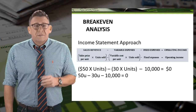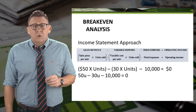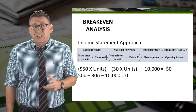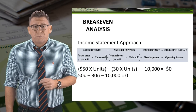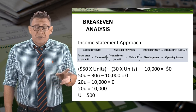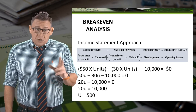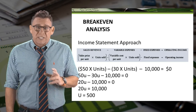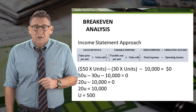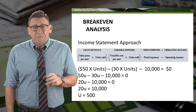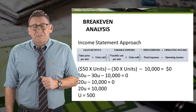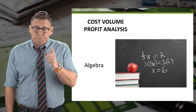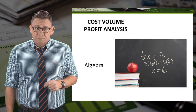Or 50u minus 30u minus 10,000 equals zero. Continuing, 20u equals 10,000, therefore break-even is 500 units. Yep, that's algebra.